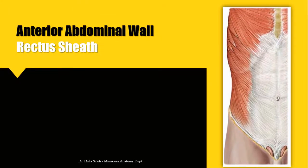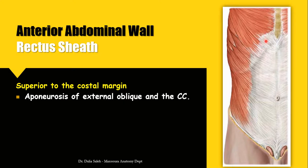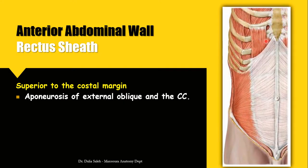The rectus sheath is one of the aponeurotic components of the anterior abdominal wall. Classically, it is described in three locations. First, superior to the costal margin: here the only function is to descend during respiratory movement. The anterior wall is made by the aponeurosis of the external oblique alone, and its posterior wall is deficient — the muscle rests on its insertion at the fifth, sixth, and seventh costal cartilages.